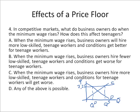If we raise the price from $7.25 to $8, we go a little bit higher and the surplus of workers increases. So when the minimum wage rises, business owners hire fewer low-skilled teenage workers, and conditions get worse for teenage workers — you don't have to offer as much to attract workers when there's a surplus of them trying to get jobs. Answer B looks good. Option C says business owners hire more — nope. Answer B is correct.